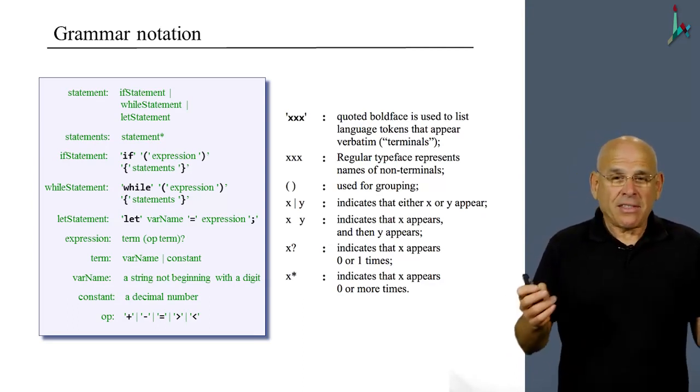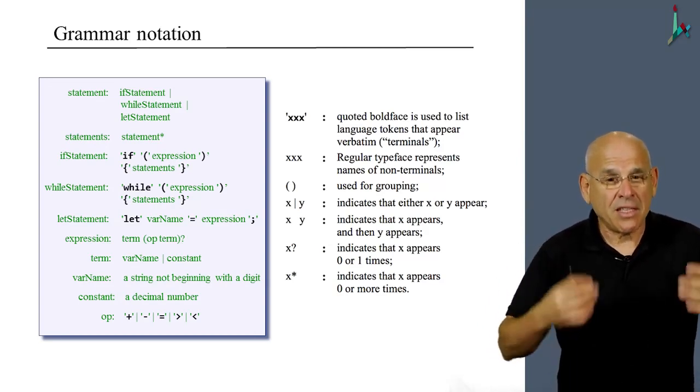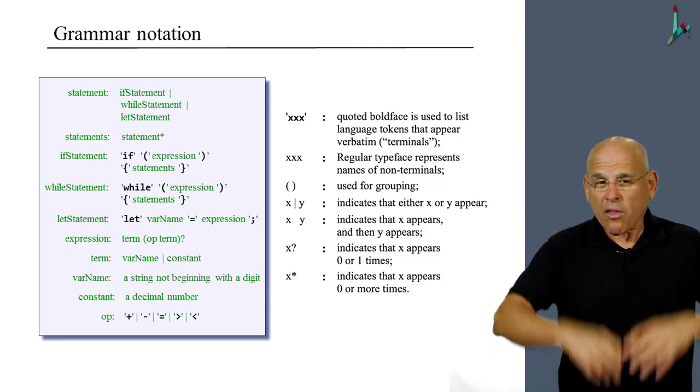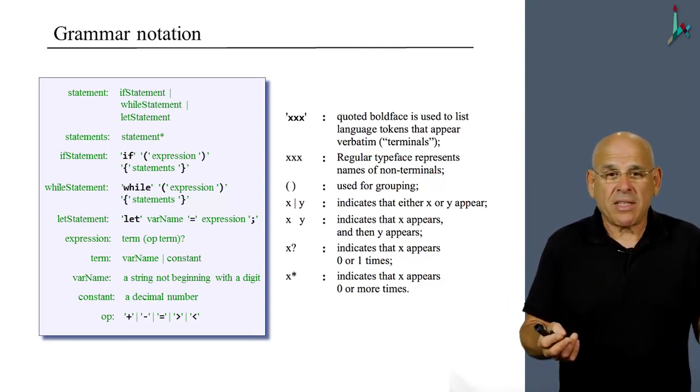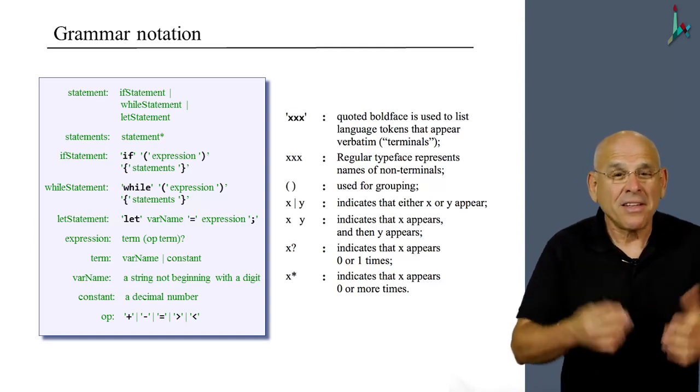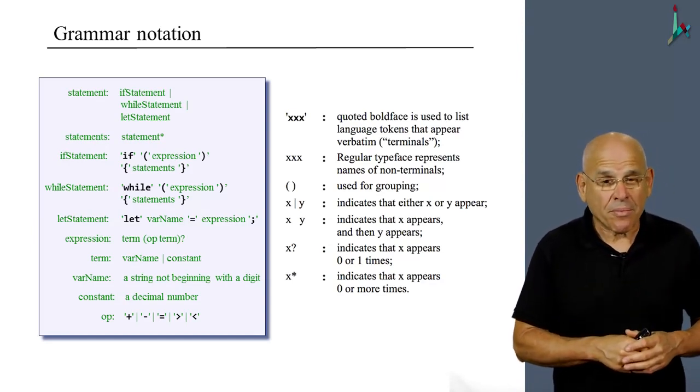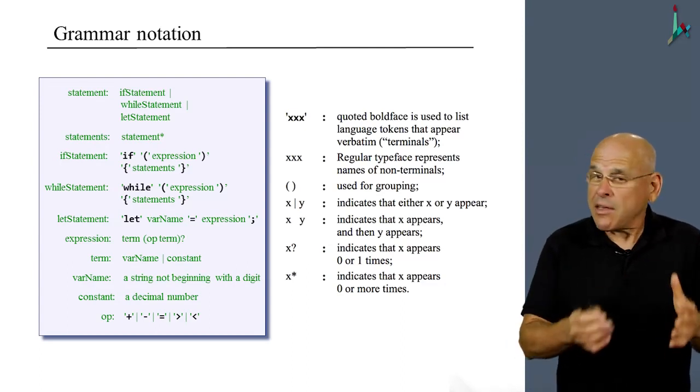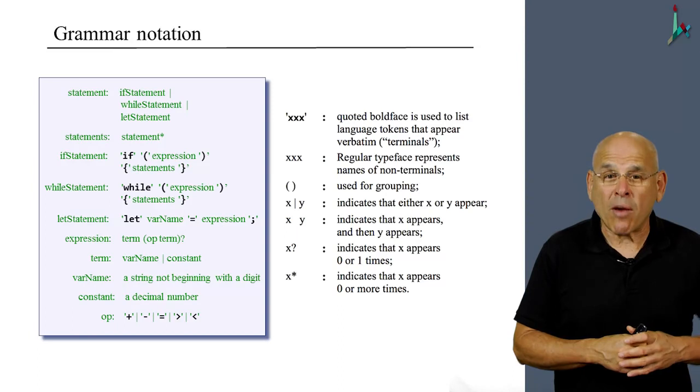And everything else is sort of meta-language that describes the grammar. All the green stuff is descriptors that I invented, or more precisely Norm and I invented, in order to describe the Jack grammar. And we're using a certain formalism here that we thought is appropriate for our purposes.